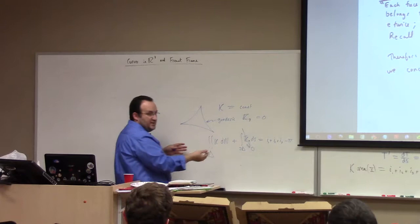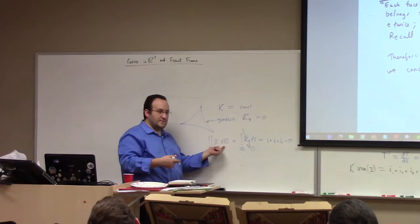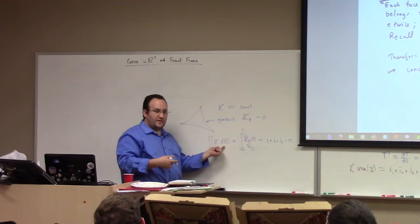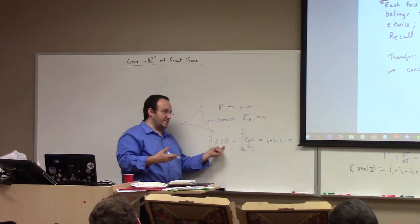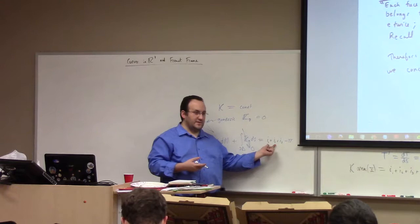You can have a positive curvature or negative curvature space. If we had a positive curvature space, then the sum of the angles is larger than pi. If we had a negative curvature space, the sum of the interior angles would be less than pi.